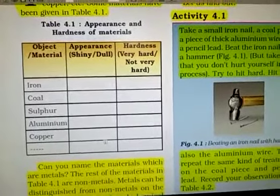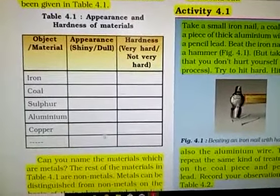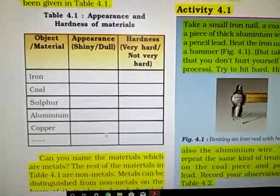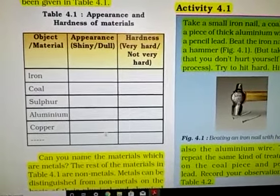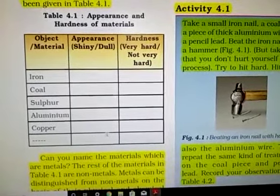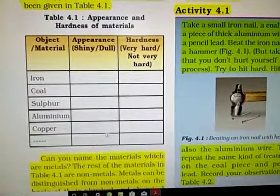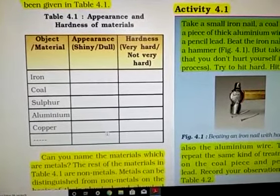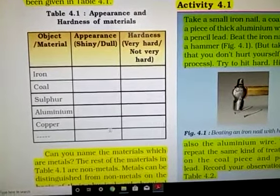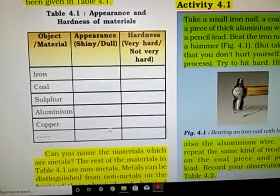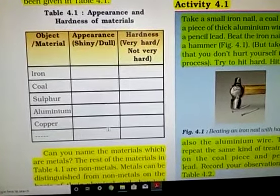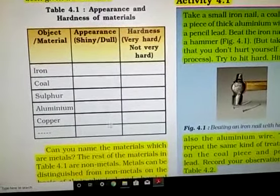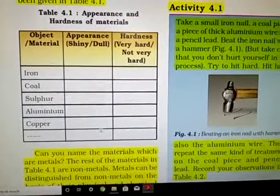Physical appearance — how does it look from outside? Shiny or dull? Hardness — how can we define hardness? If anything is difficult to scratch, that is hard. If easy to scratch, that is soft. You will have studied this definition in class 6.